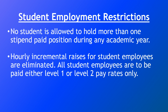There are two key student employment restrictions to be aware of. Number one is that no student may hold more than one stipend paid position during any academic year. In order to facilitate equity in student employment, anyone holding a stipend position such as an RA is restricted to only that one stipend role. It's important for supervisors who pay on a stipend to communicate this to their students. The second restriction is on incremental hourly raises — all raises have been eliminated beginning fall 2016. Positions can only be at level one minimum wage or level two minimum wage plus $2, with no middle ground or increases allowed.